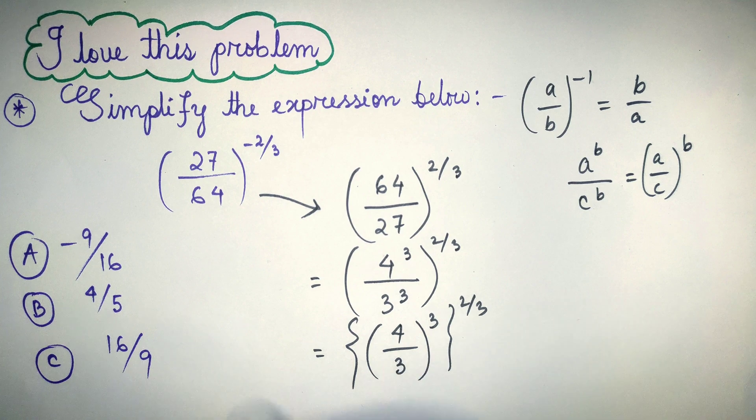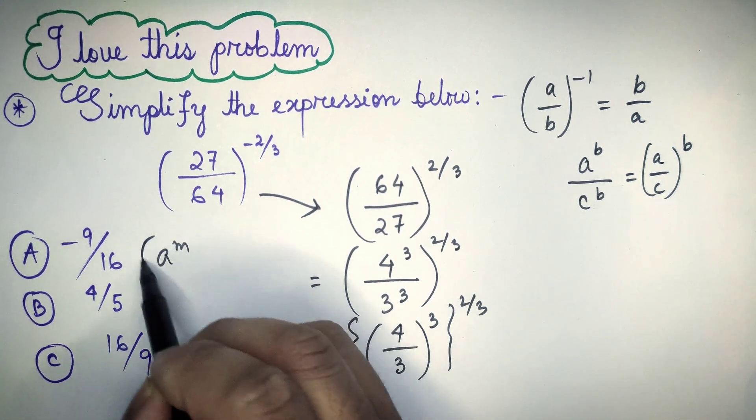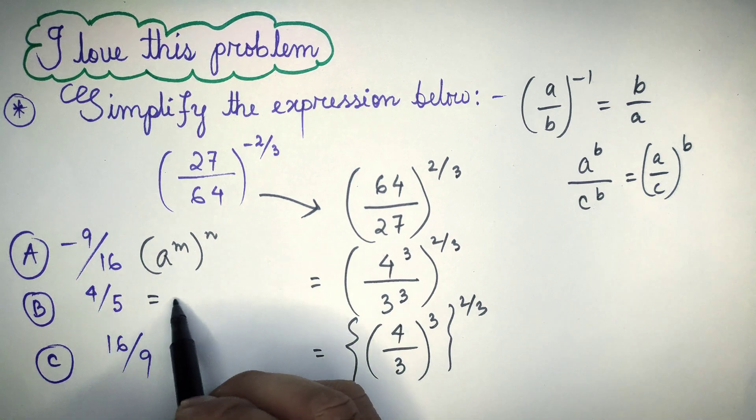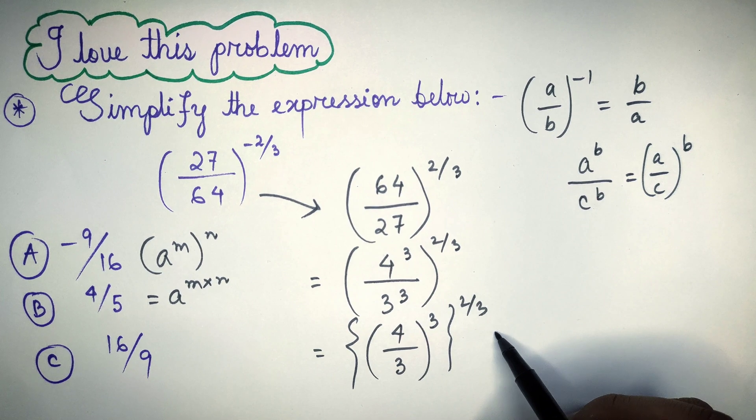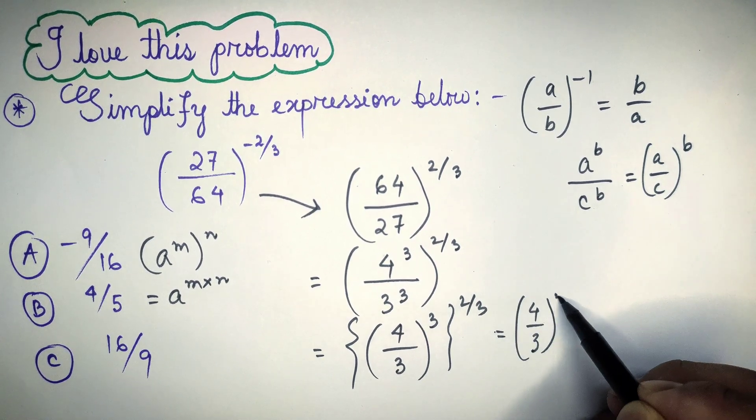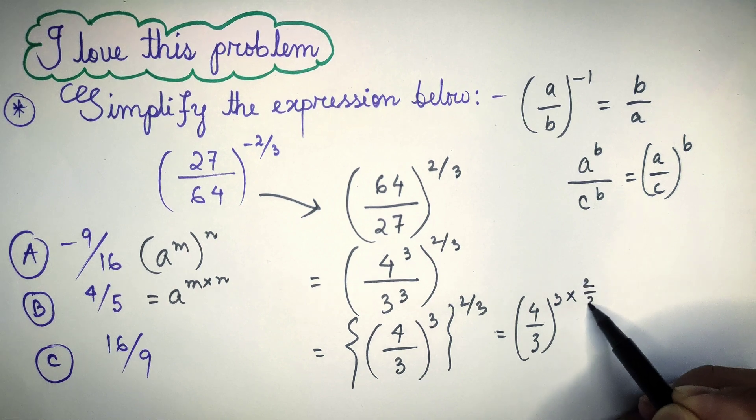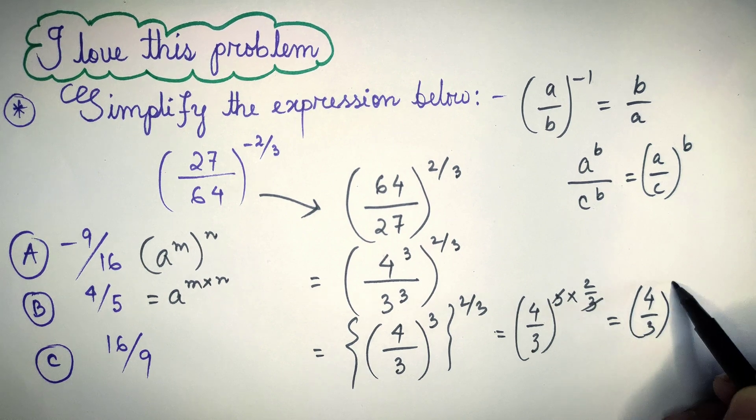Then, after this, we know that A to the power M whole into N is equal to A to the power M multiply N. So, the value of this will be 4 by 3 to the power 3 multiplied by 2 by 3. Cancelling this 3 by 3, we get 4 by 3 whole square.